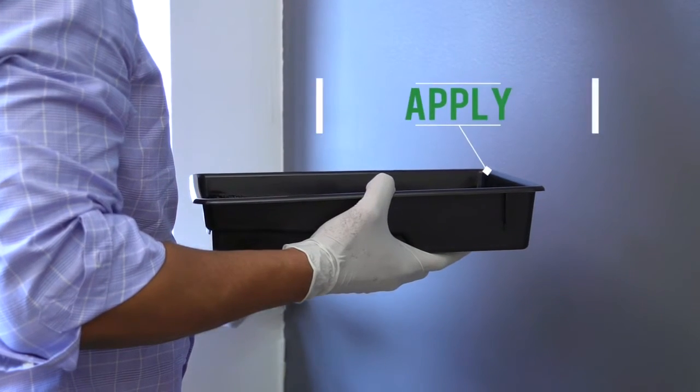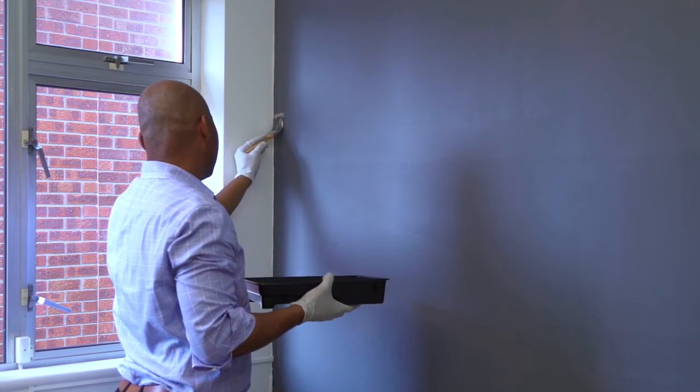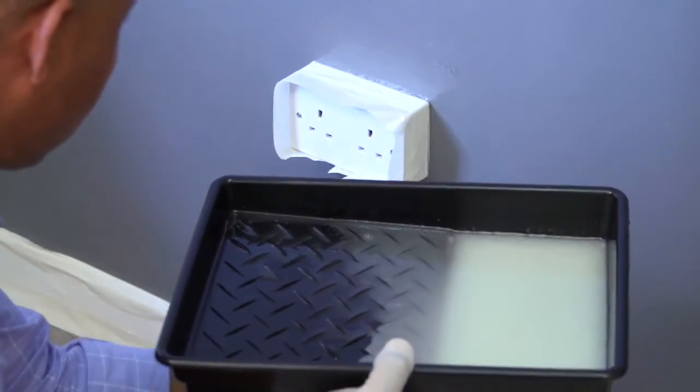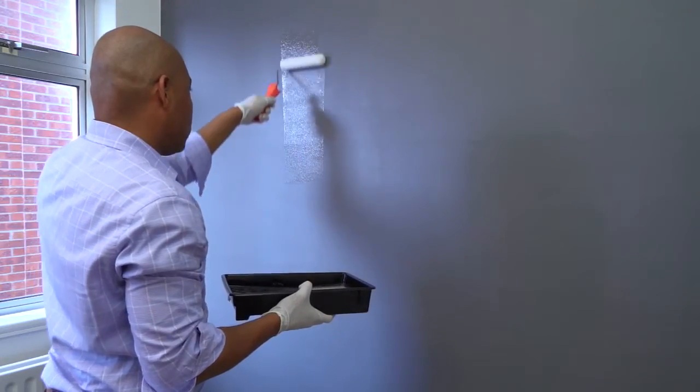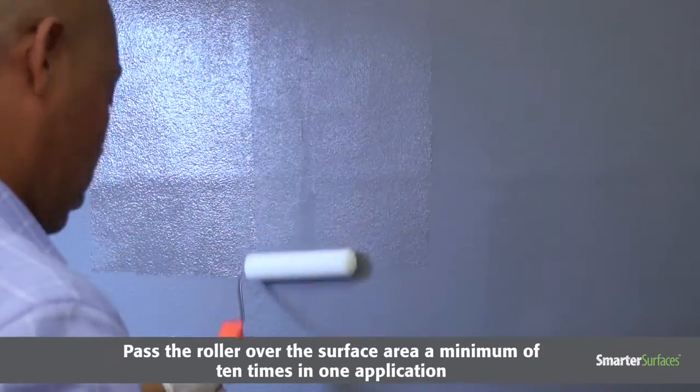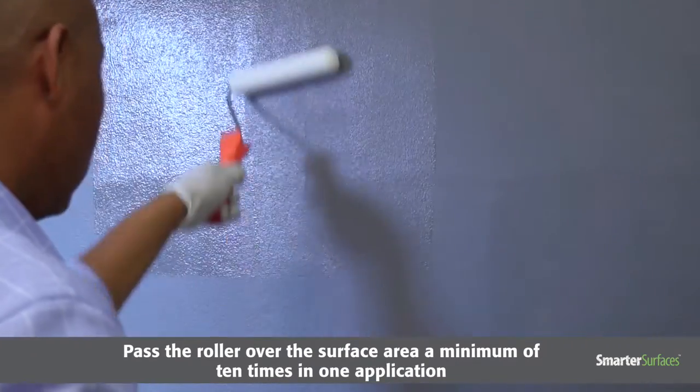Step 6. Apply your SmartWall Paint. Fill in the edges of your surface using a paint brush, working from left to right in 1 meter sections. Use a foam roller sleeve to fill in the rest of your surface. Pass the roller over the surface area a minimum of 10 times in one application, to ensure a generous, smooth and even coating.